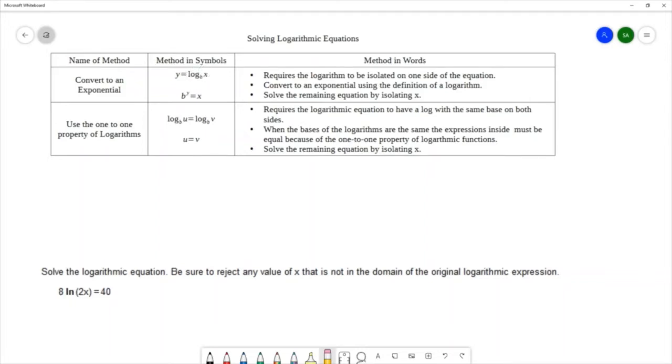If we look at our equation, we do have a log only on one side. However, it's not isolated because of this 8. So we'll most likely be using this first technique to solve the equation. But let's take a look at the second method just to be sure. For the second method, we're required to have a log with the same base on both sides of the equation. We can see that in our equation, we have log only on one side. So we won't be using the second method.